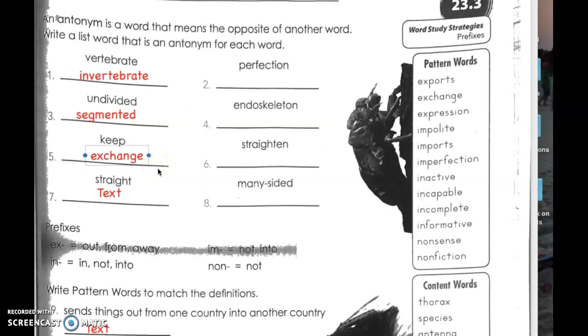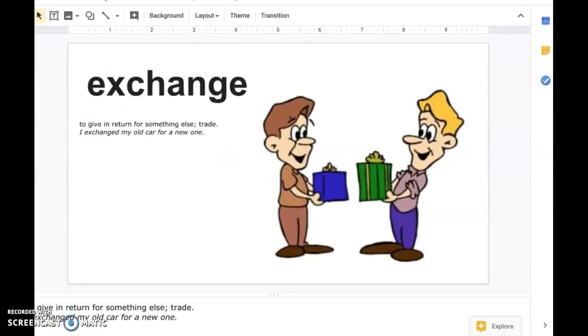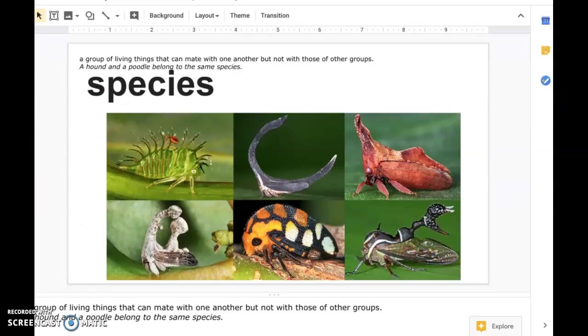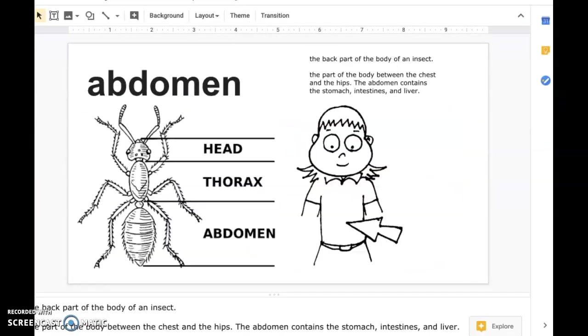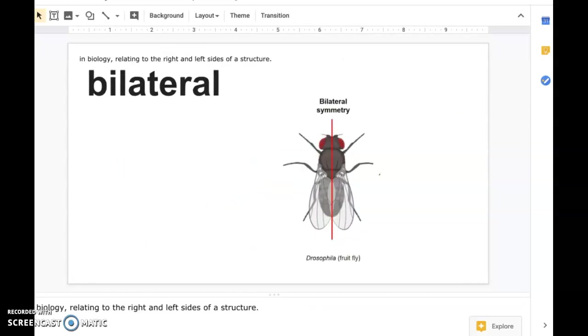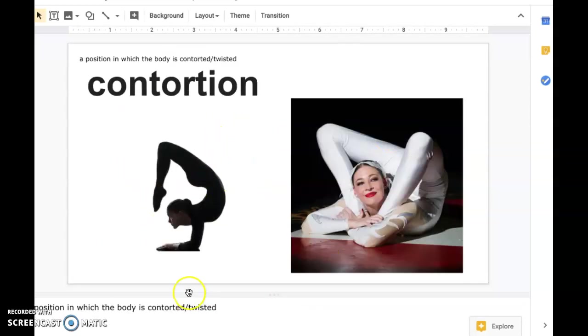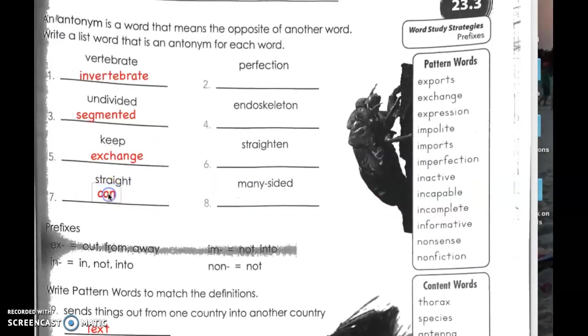Number seven, straight. What is the opposite of straight? So think about a person who is standing up straight. If they are not standing up straight, they're doing the opposite of it. What are they doing? They're bending. Pause the video. Look through the definitions. I think it is contortion, right? Opposite of a person who is standing straight, someone whose body is twisted, contorted. So seven is contortion.